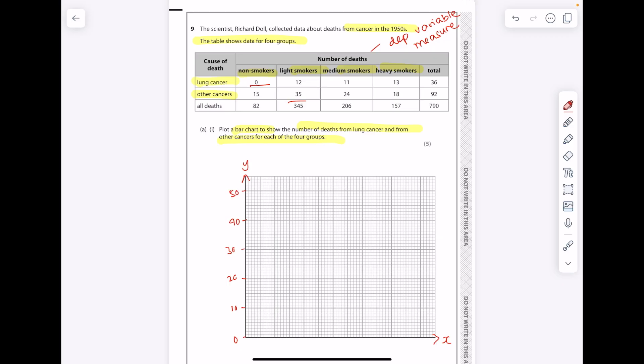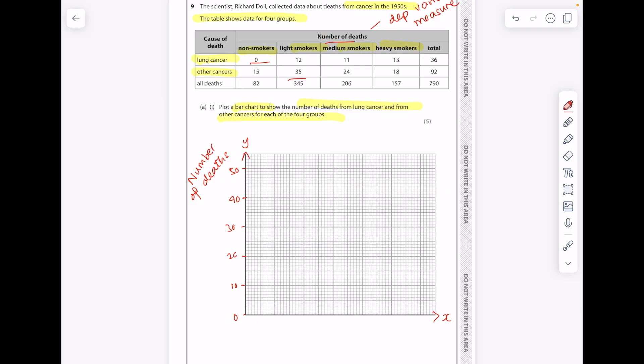Then just use that table to help you with this label. So we're going to write number of deaths, no need for units this time. And then I think the x-axis is more difficult to pick through, but on the x-axis in this particular case we want to mention whether it's non-smokers, light smokers, medium smokers, or heavy.